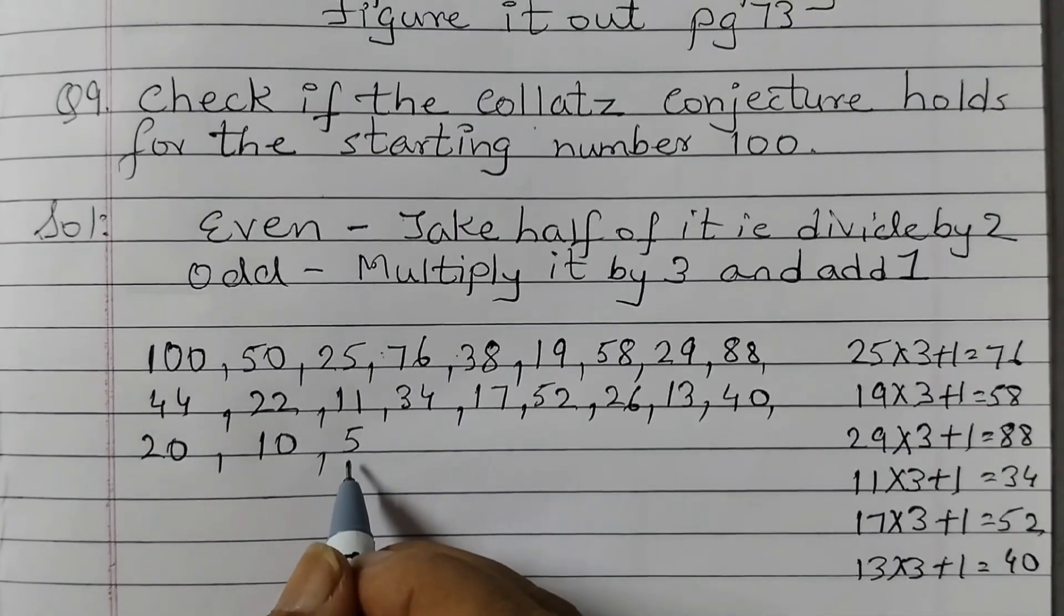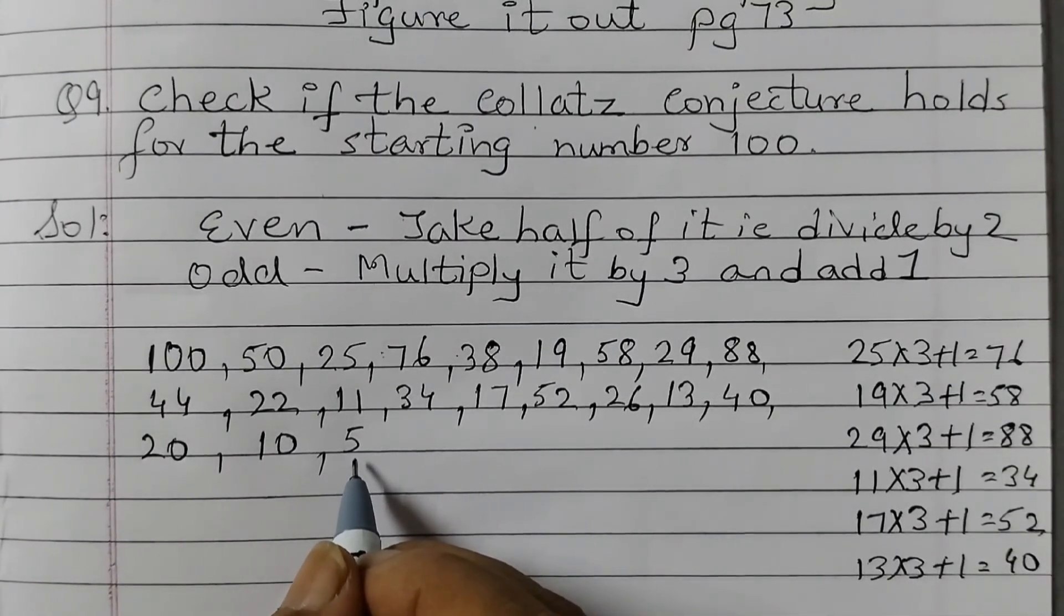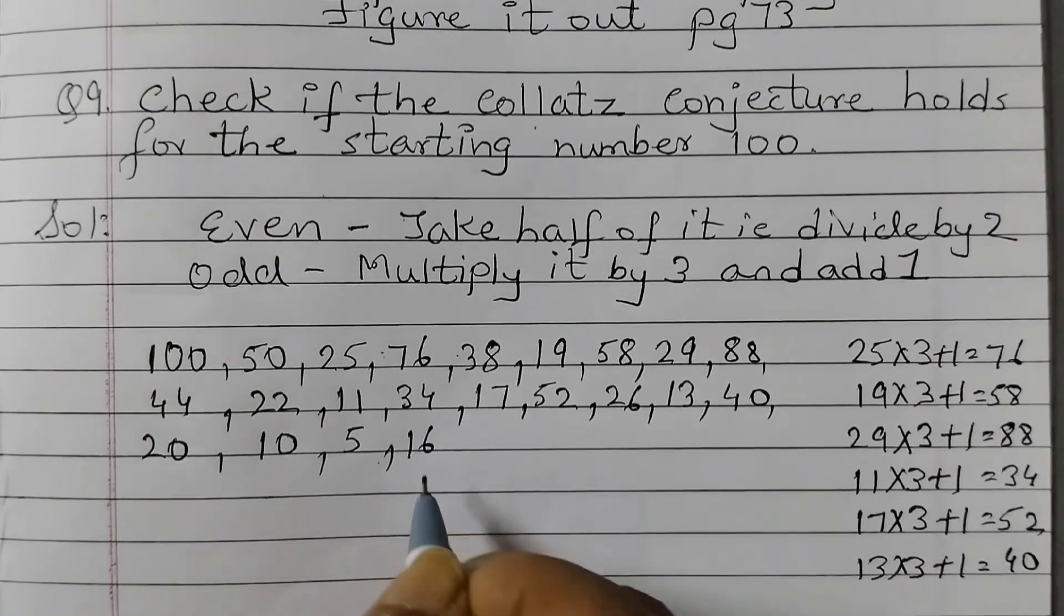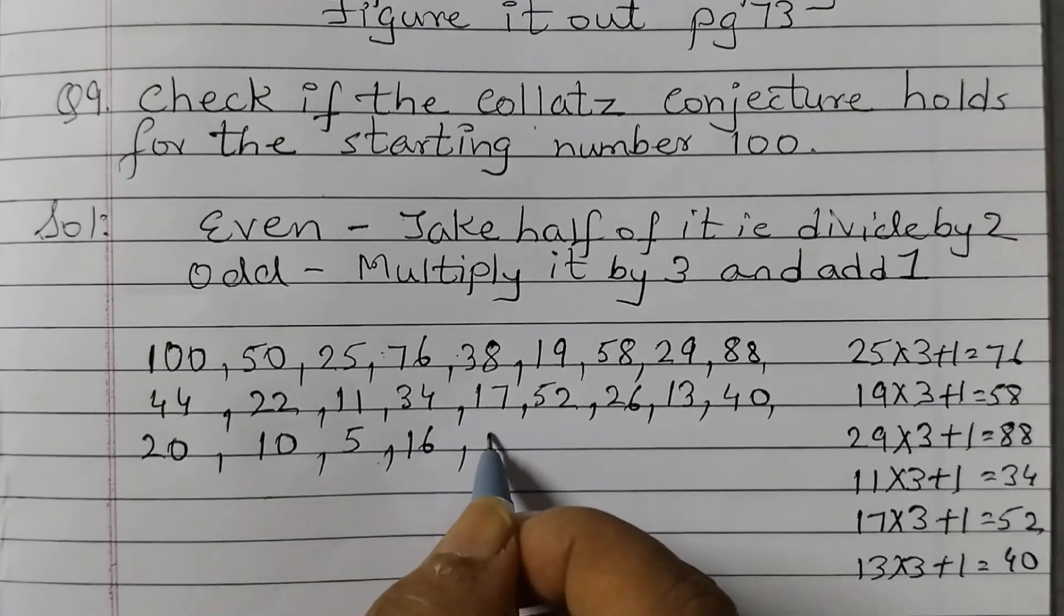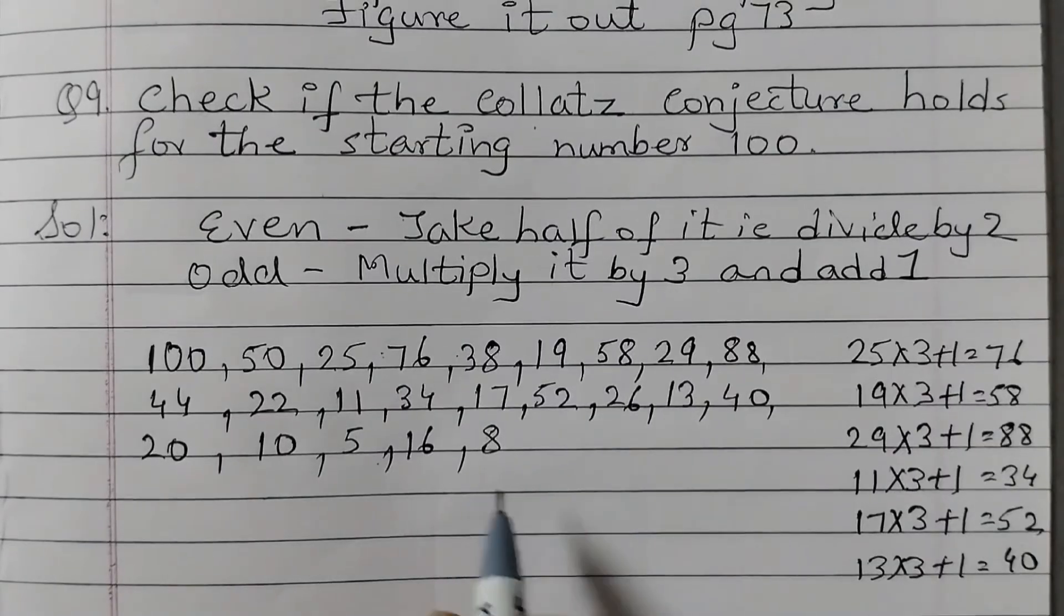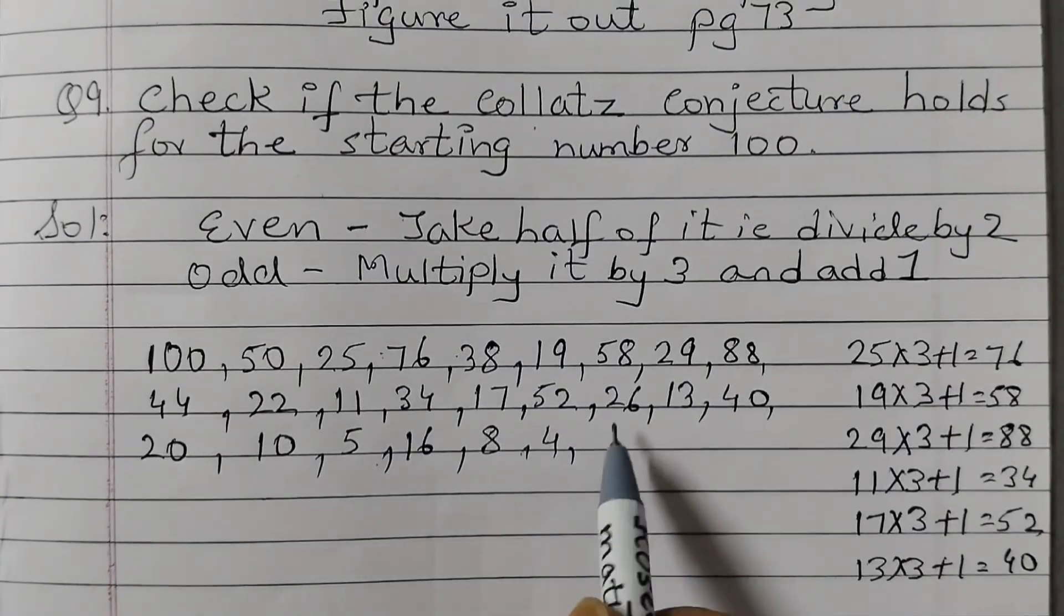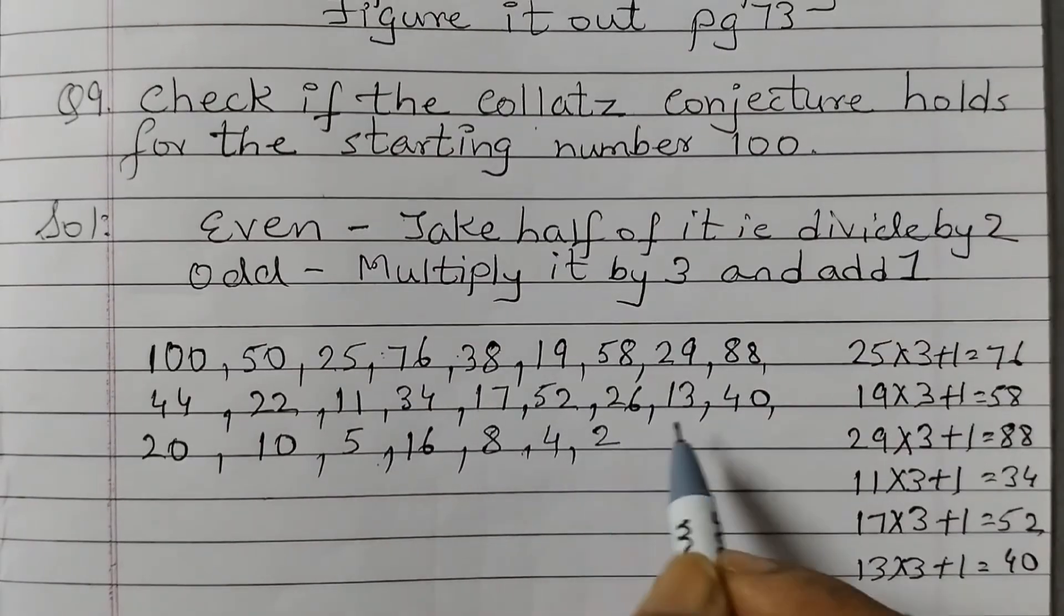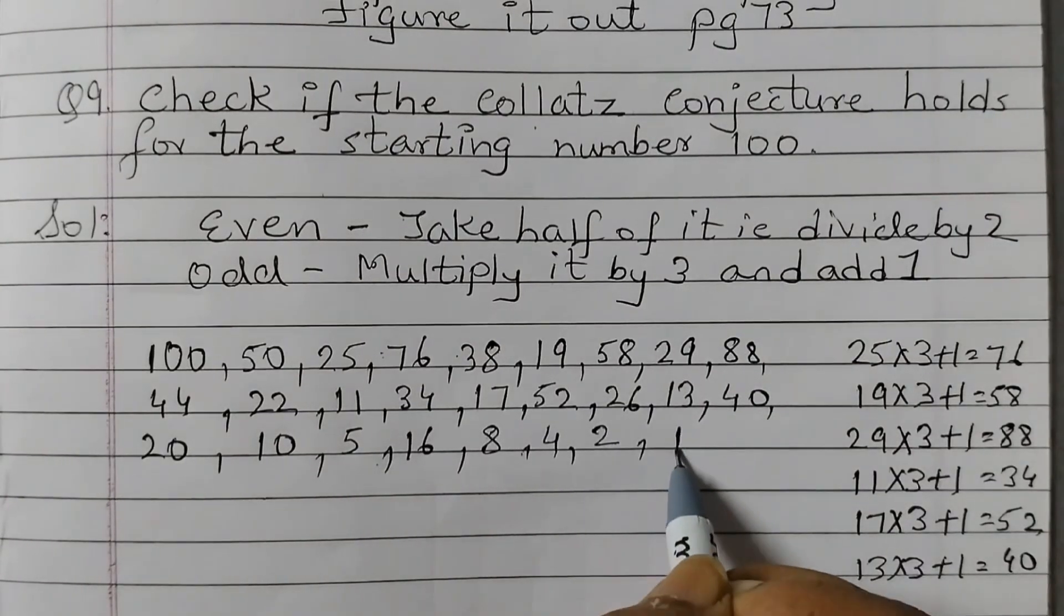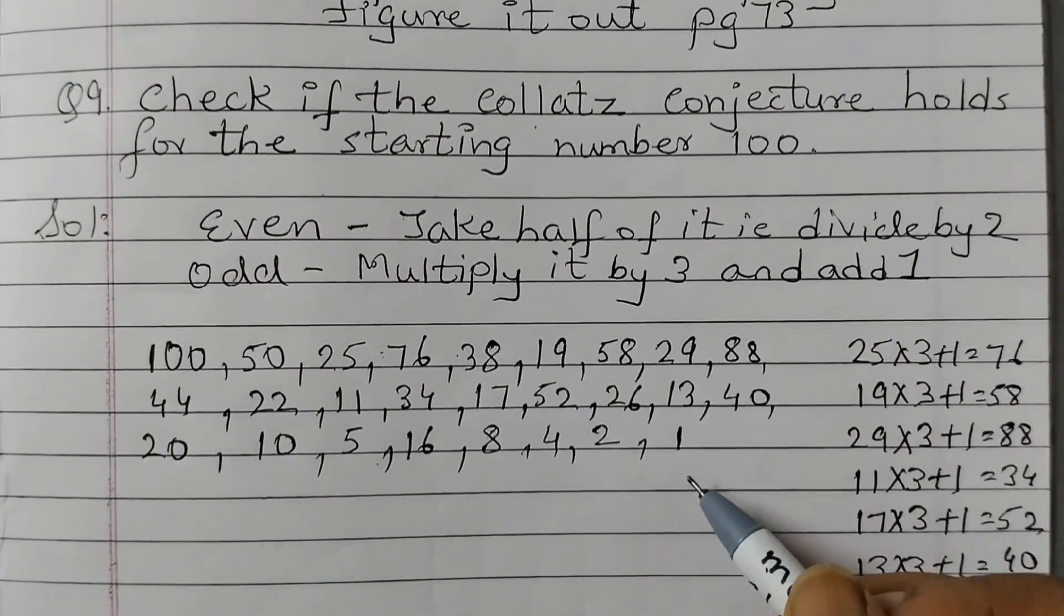5 is an odd number. So 5 times 3 is 15 plus 1, 16. Even, half of 16 is 8. Half of 8 is 4. Half of 4 is 2. And half of 2 is 1. See finally we have reached 1.